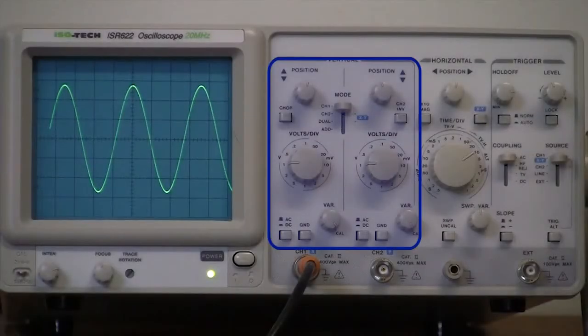The set of controls on the left of the oscilloscope vary the position and scaling of the vertical or voltage axis of the signal displayed on the oscilloscope screen.